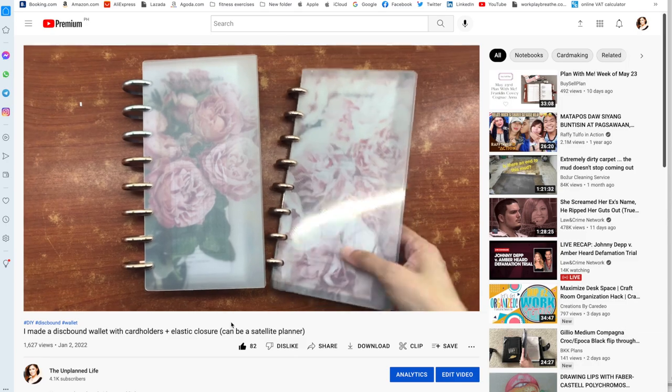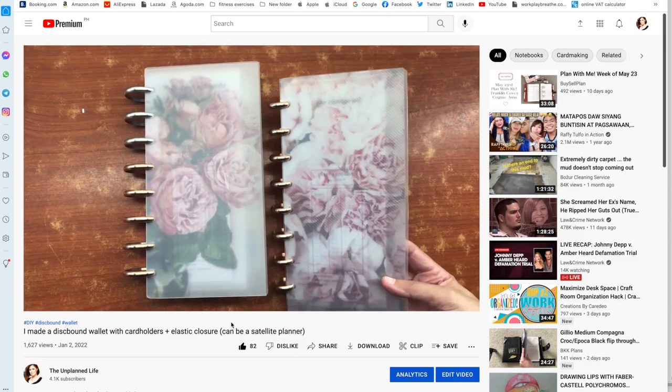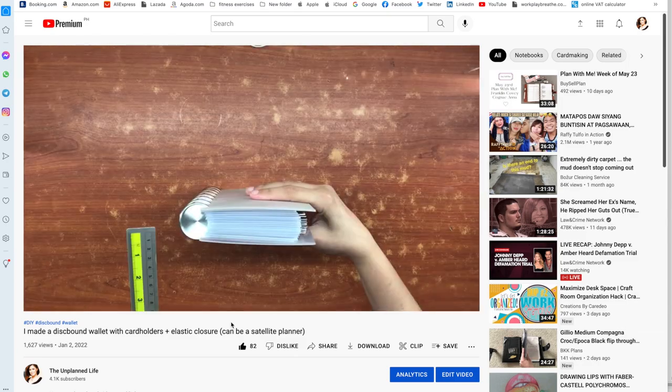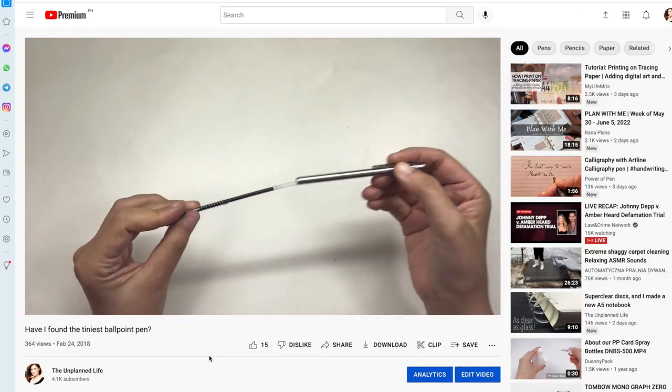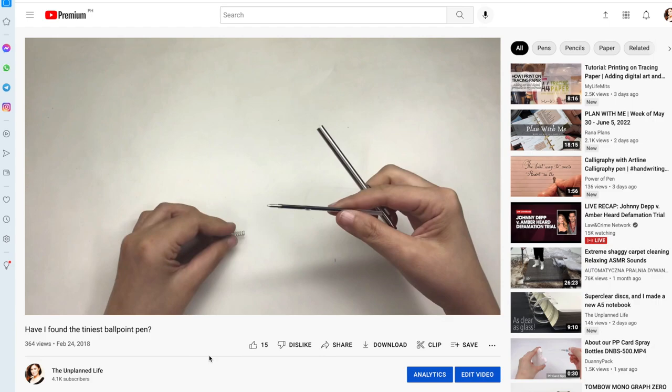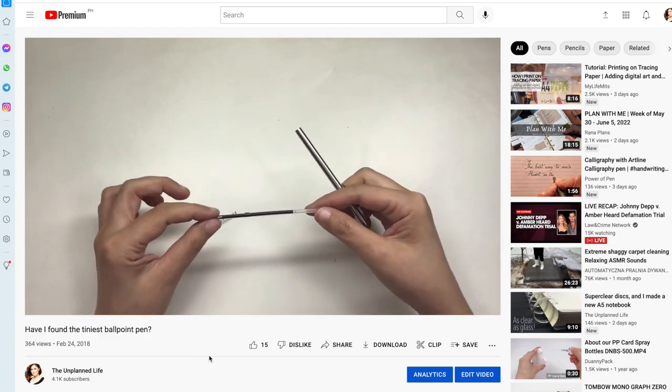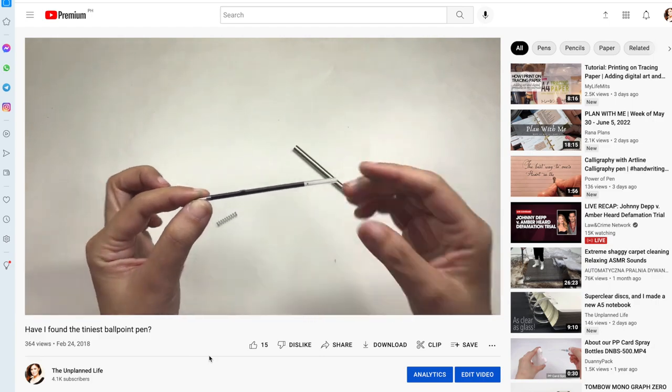This disc bound wallet has credit card sleeves that I made out of tracing paper and lamination. Please check out that video, I'm sure you're going to like it and I also have a review of this ballpoint pen the Pilot Birdie ballpoint which I will link down below as well.